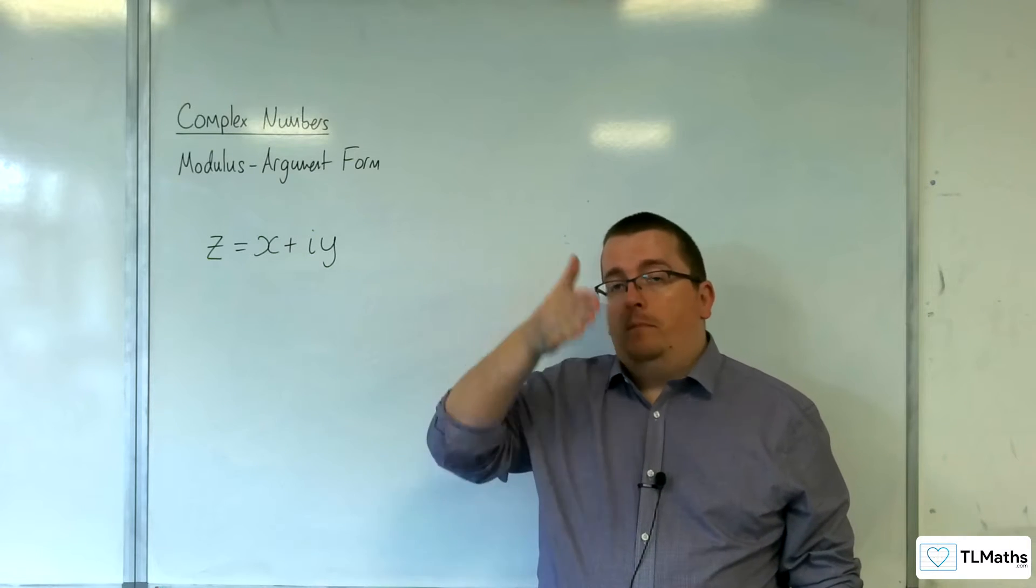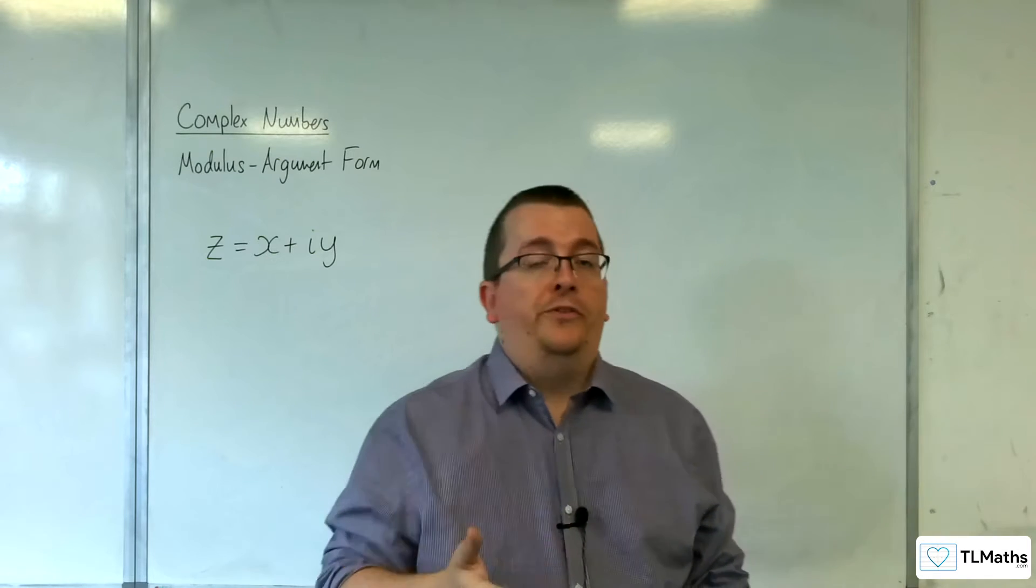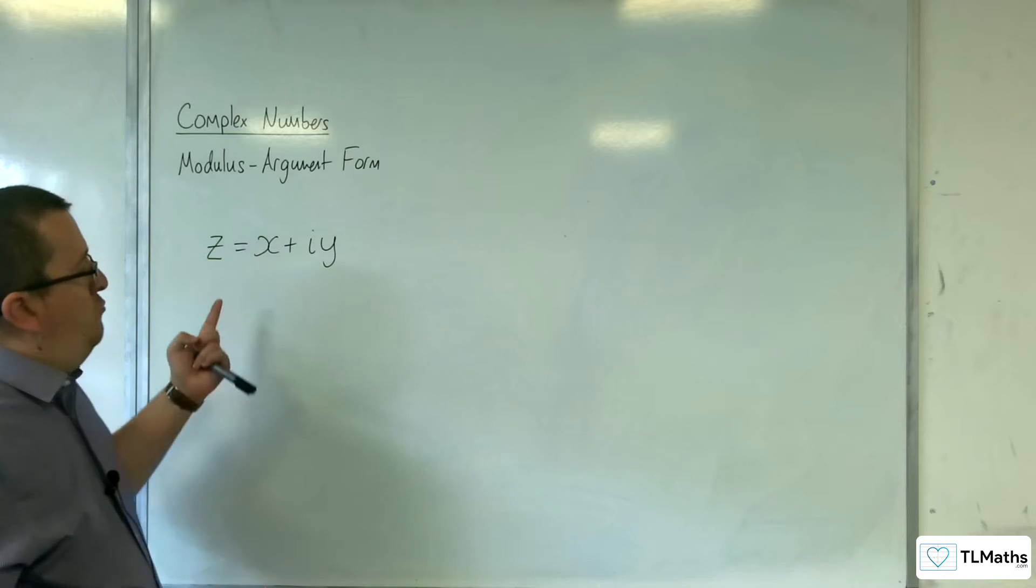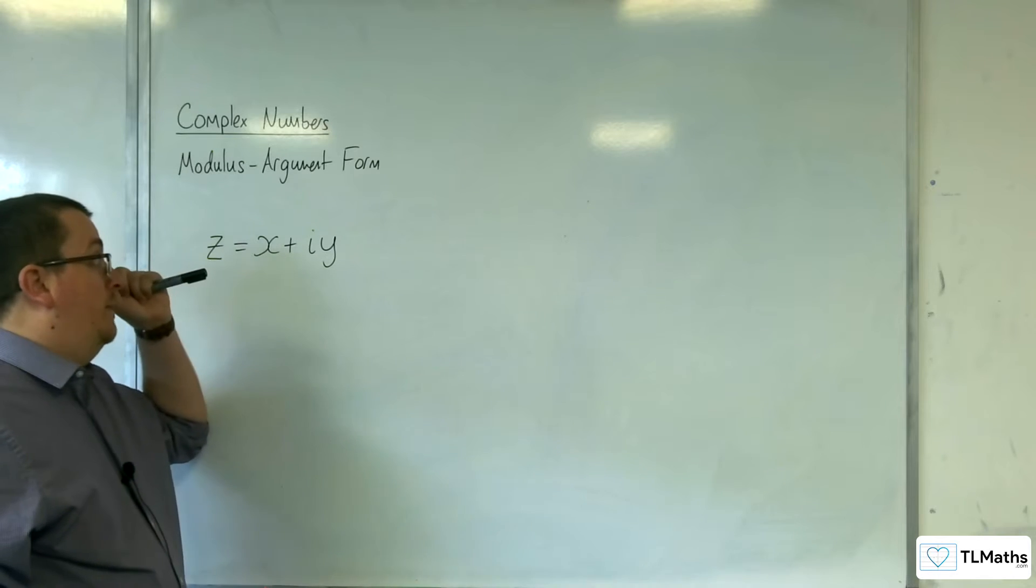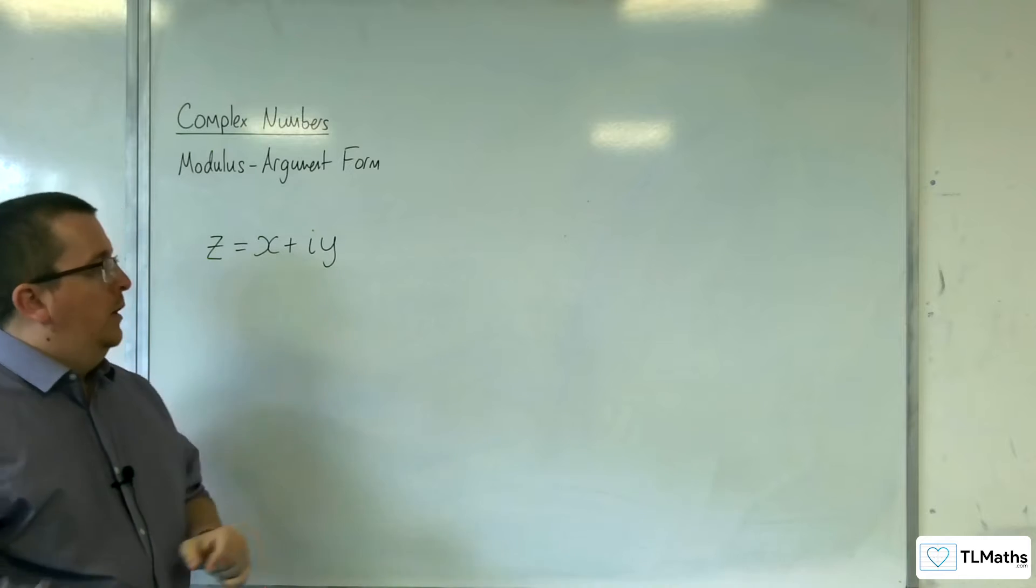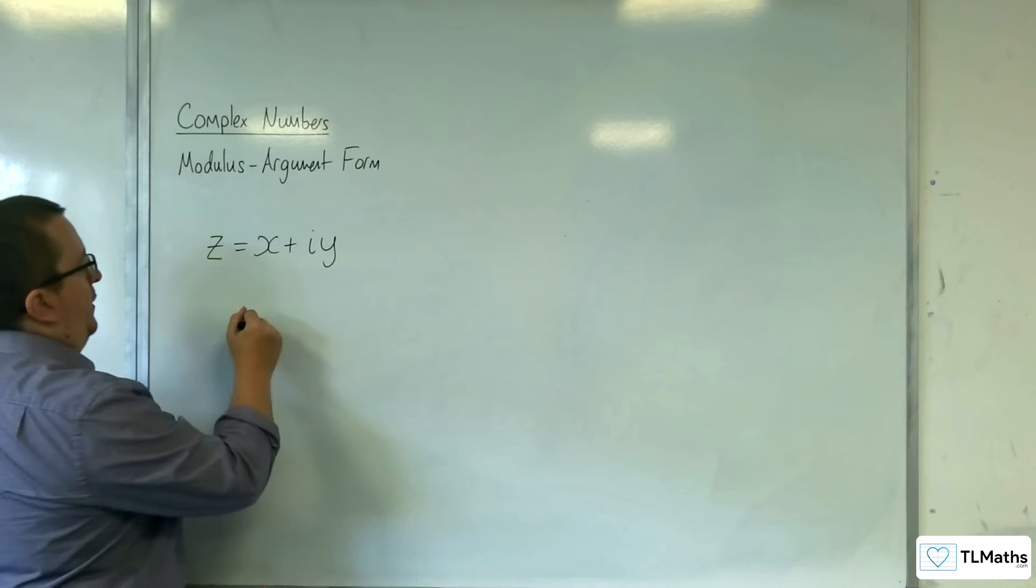Writing a complex number in modulus argument form is the final stage of this. So when I write a complex number in the form of X plus IY, we refer to this as Cartesian form.